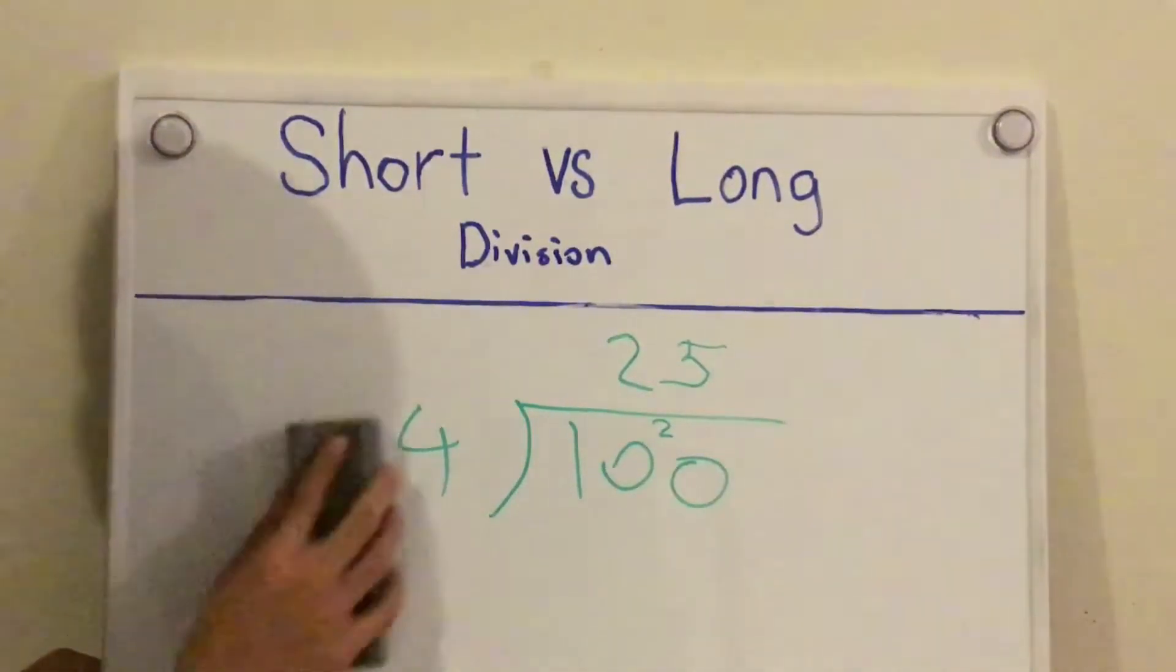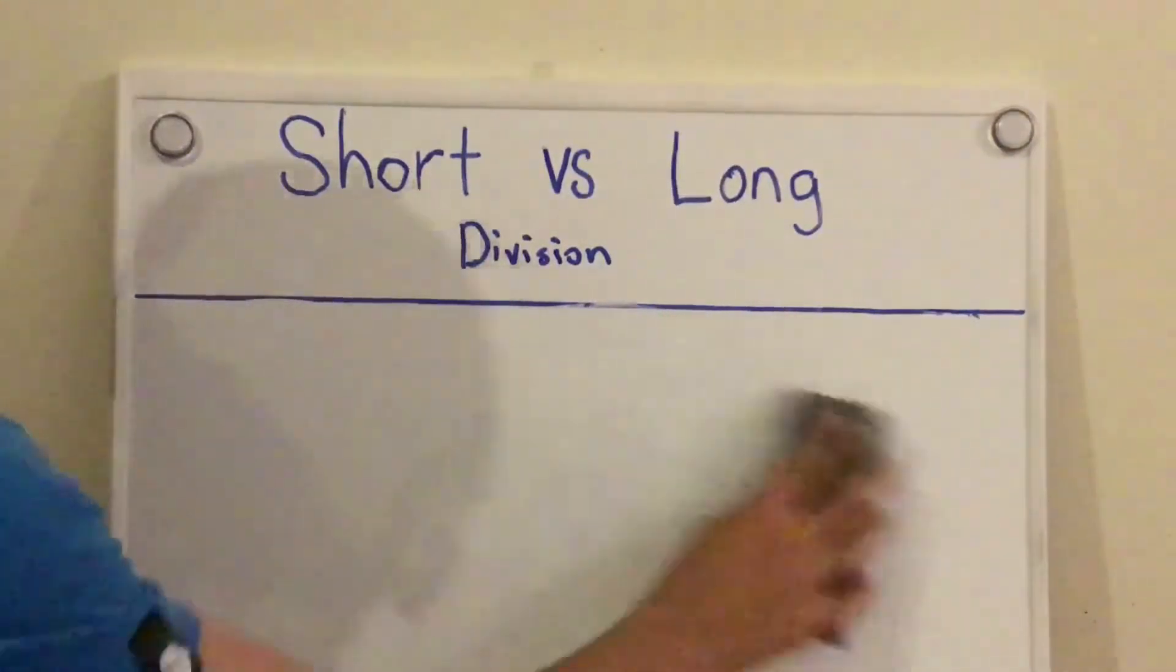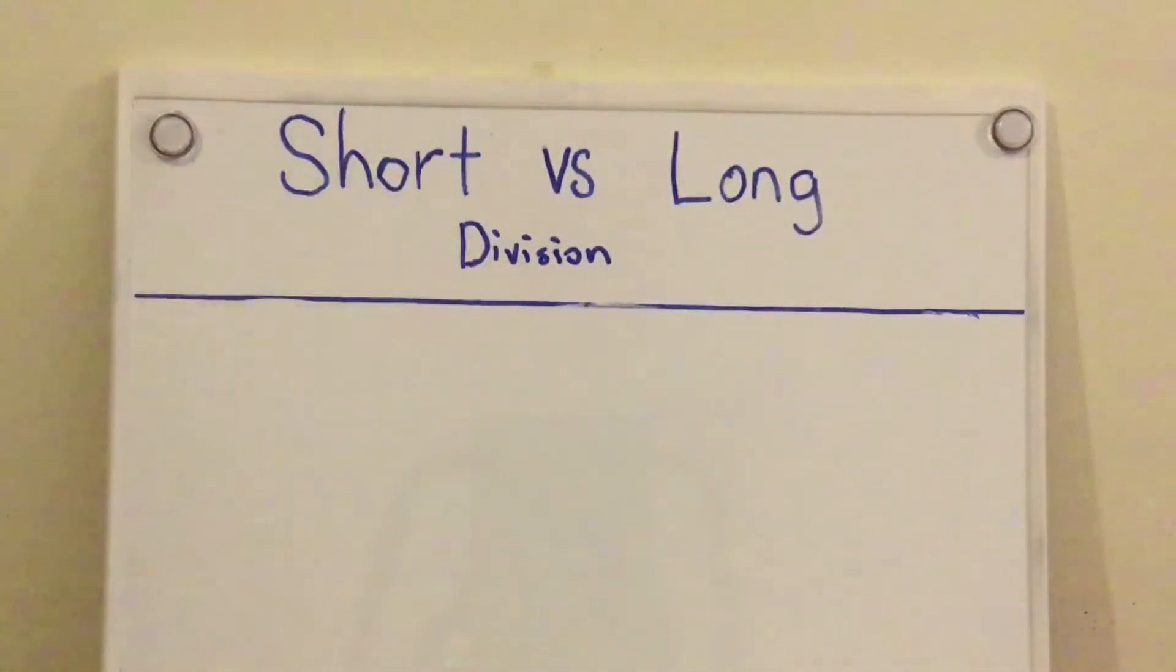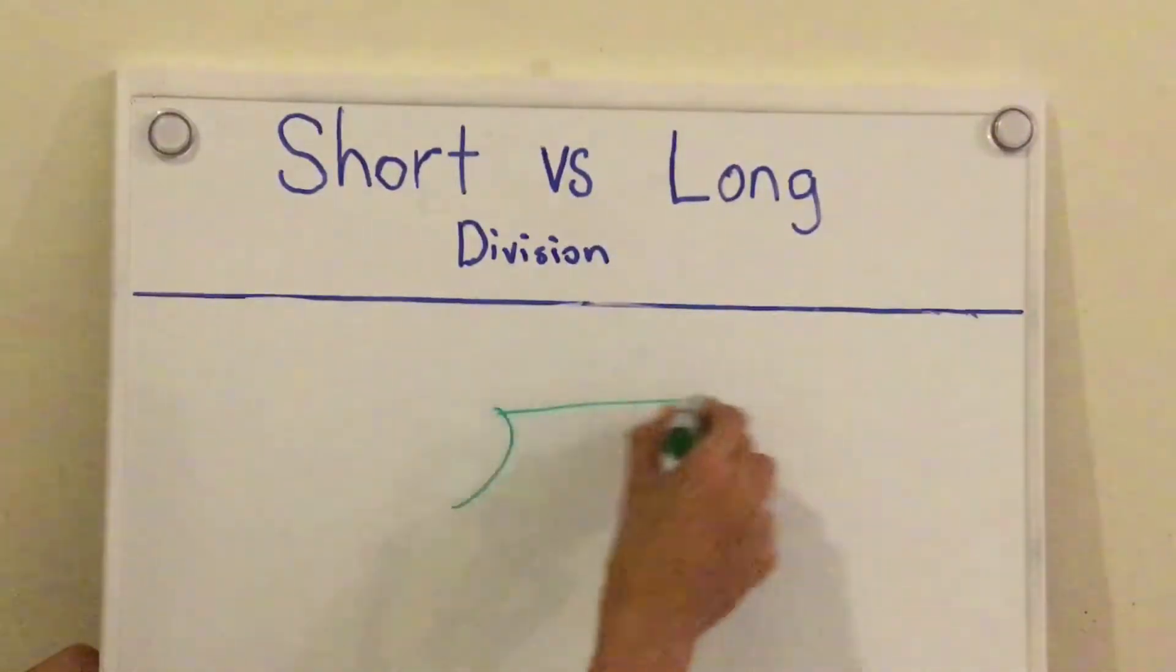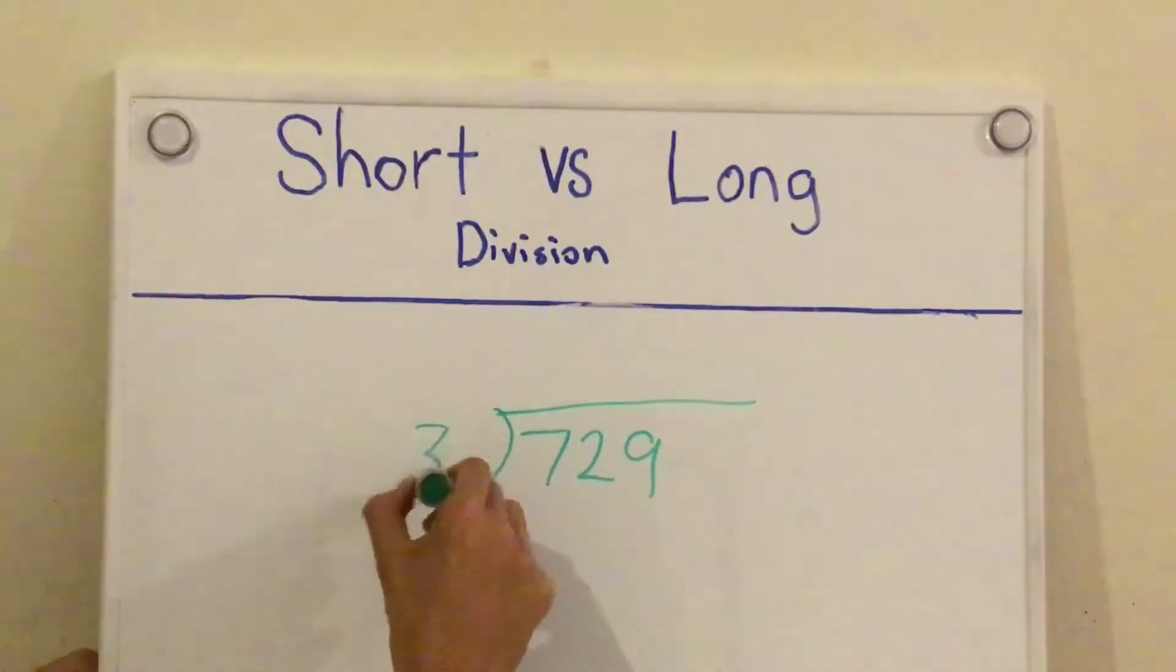Okay, so that's short division. What about if it's long division? So I'm going to use the same examples and let's see if we get the same answers. So our first example, we're going to use 729 divided by 3.